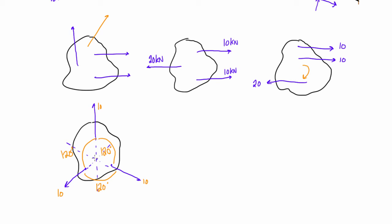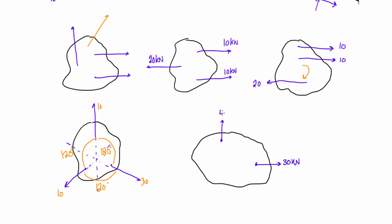It doesn't mean concurrent forces always have to have the same magnitude for static equilibrium. For example, if we have a force of 30 kilonewtons and another of 40 kilonewtons, there is a combination that can make this object statically in equilibrium. By drawing the lines of action of these forces, we know we basically just need a force that's going down and over, whose line of action passes through the intersection point of the other two lines of action.